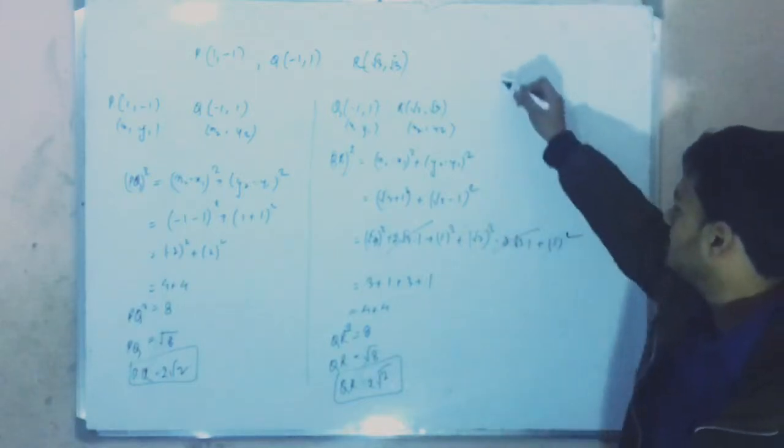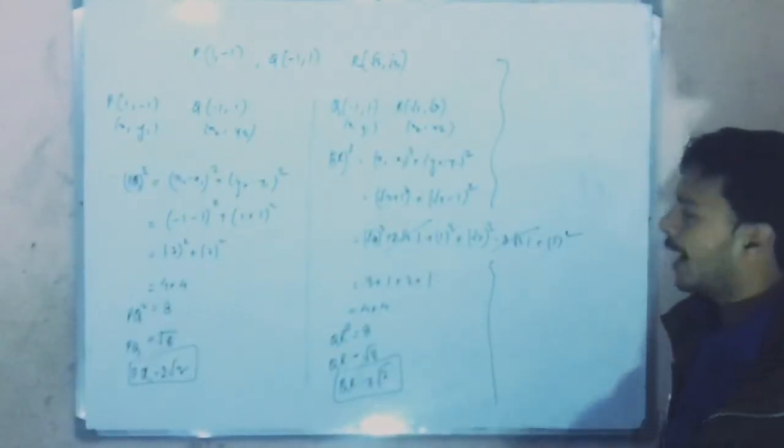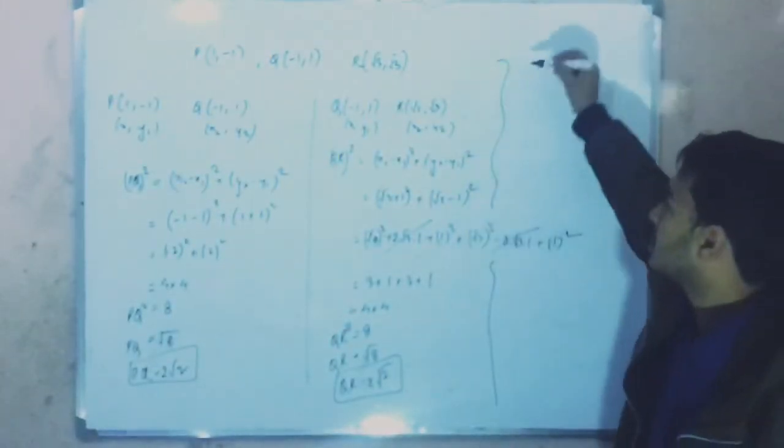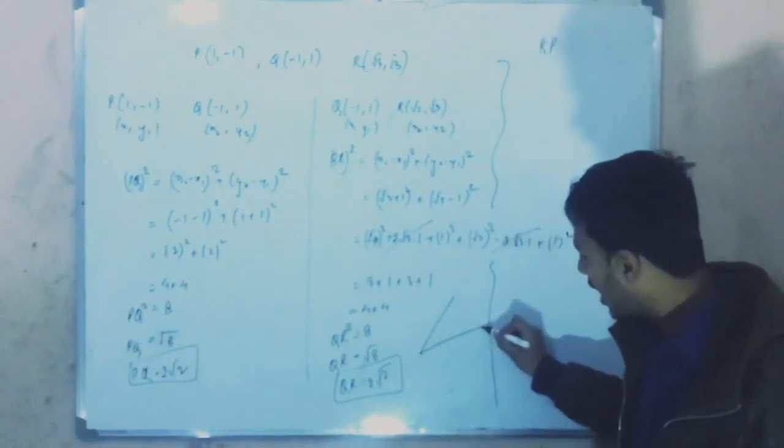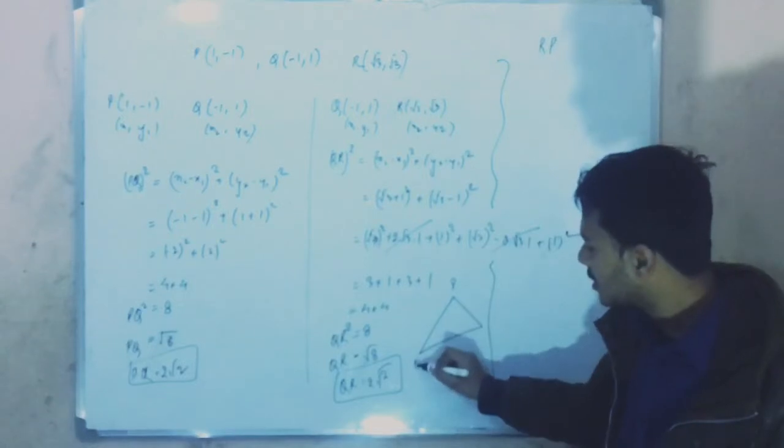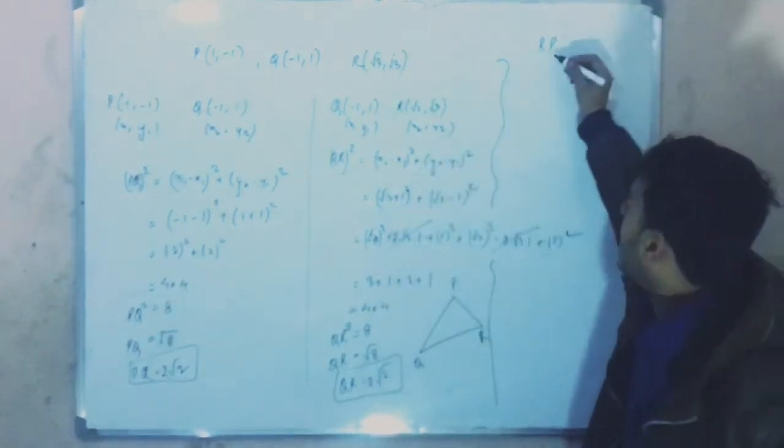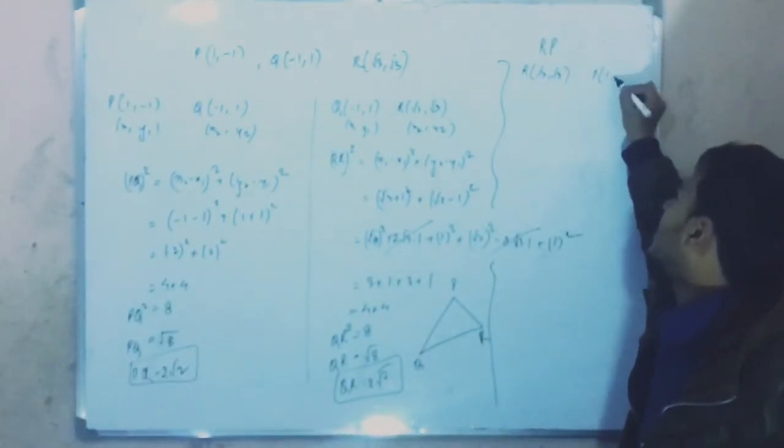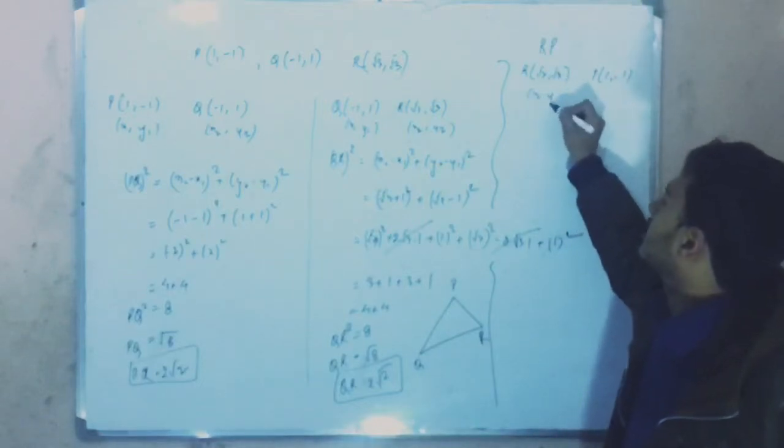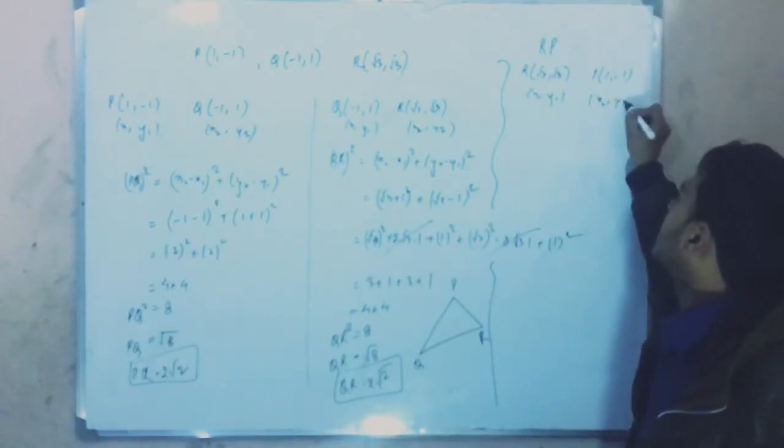Now we have another calculation for RP. We are solving a triangle, so we need to find all three sides: PQ, QR, and RP. R is at root 3 comma 3, and P is at 1 comma minus 1. So using the distance formula, this is square root of 1 minus root 3 squared plus minus 1 minus 3 squared.